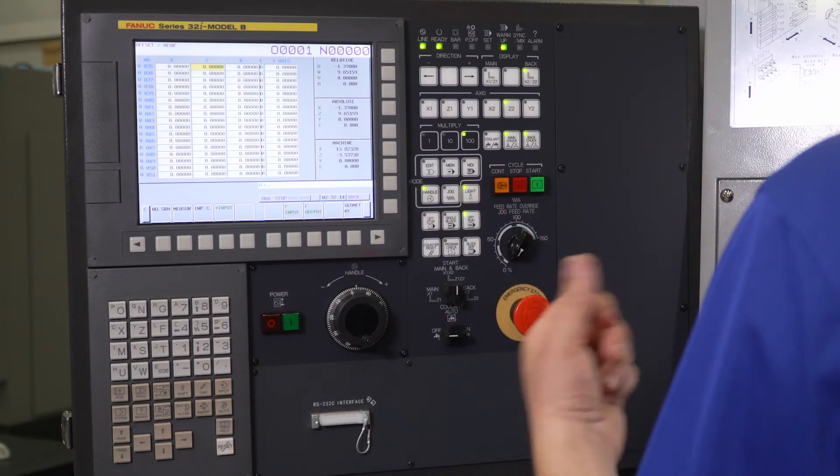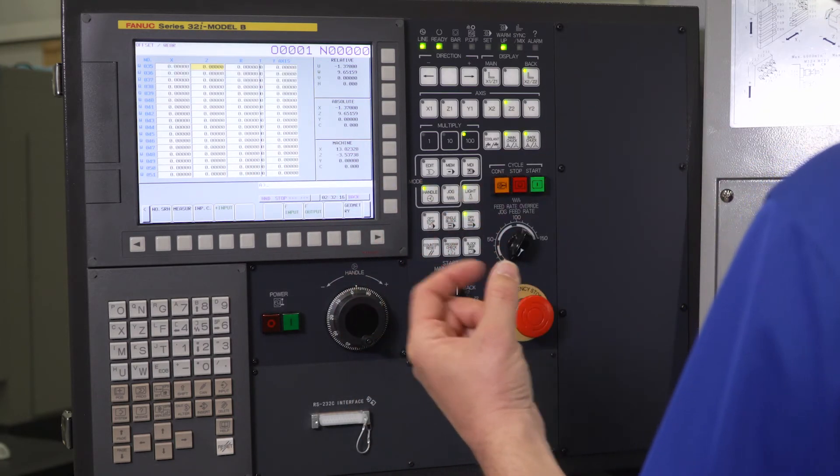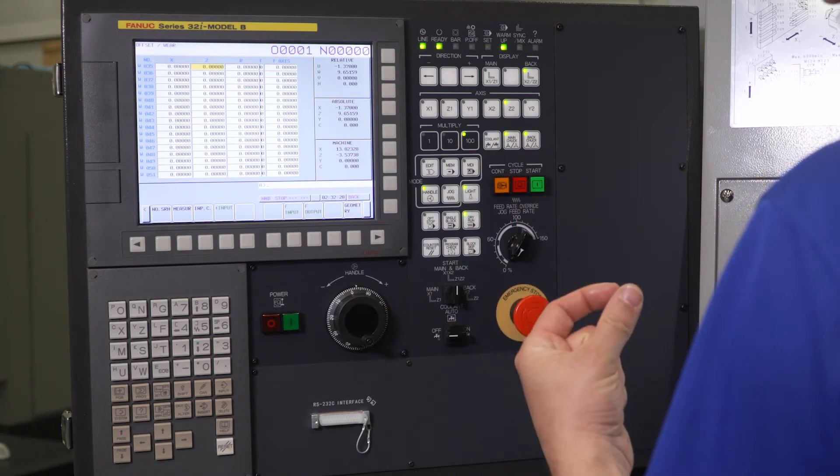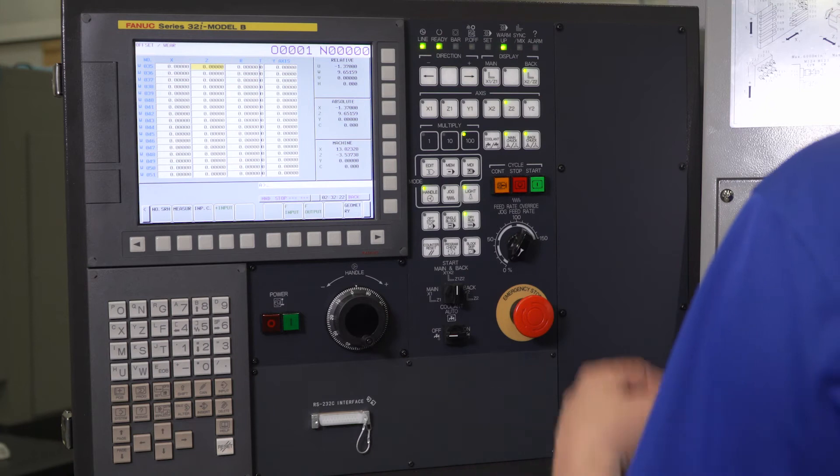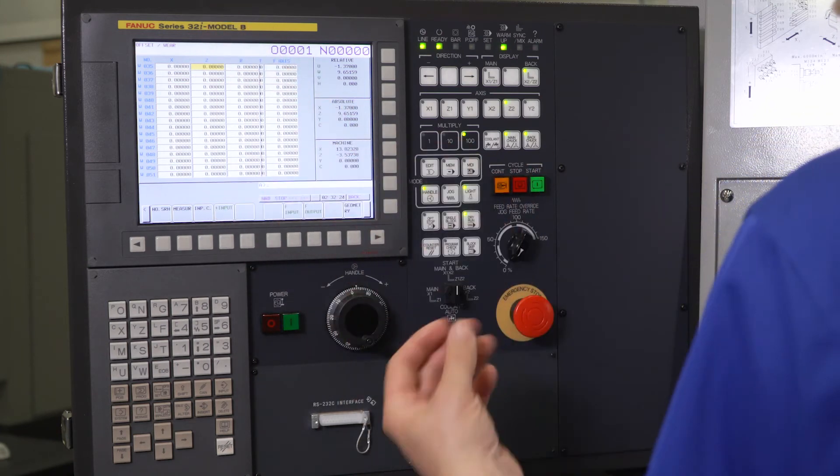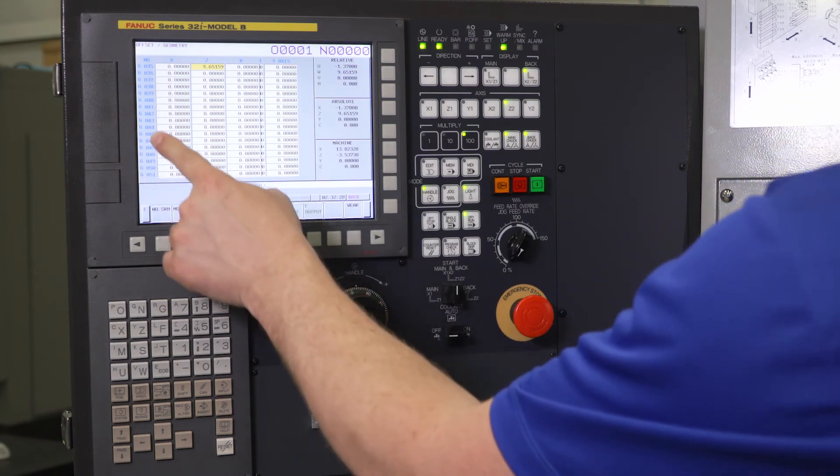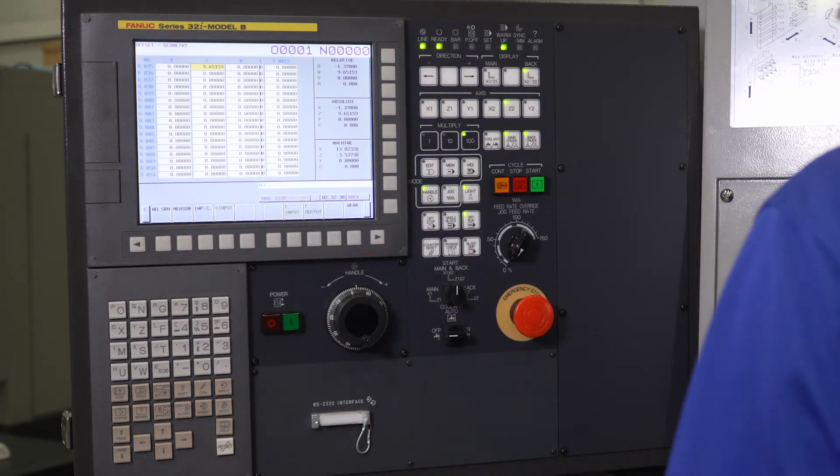Once you run a part and you want to take a measurement on your part and do that fine tuning and dial it in and get it right on the specifications of your print, then you use wear and do those fine adjustments. But when you initially touch off, make sure in geometry. You can see a G here to know that you're in geometry. And also at the top, it will say geometry.